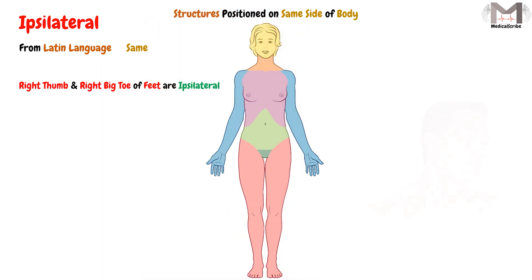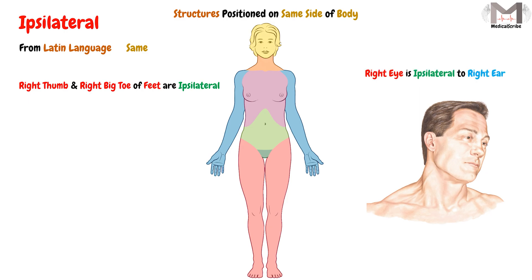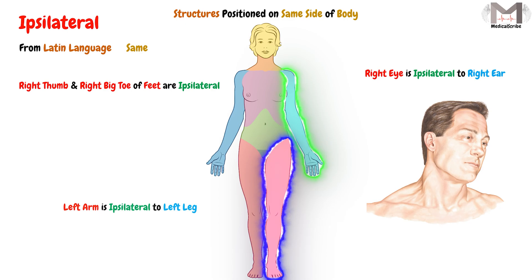Or if we say the right eye is ipsilateral to the right ear, that means the right eye and the right ear are on the same side of the body. And lastly, if we say the left arm is ipsilateral to the left leg, this means the left arm and the left leg are on the same side of the body, which is the left side.